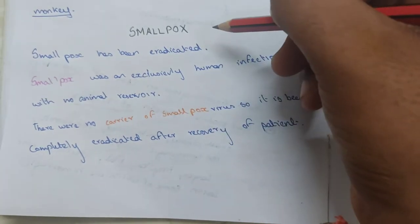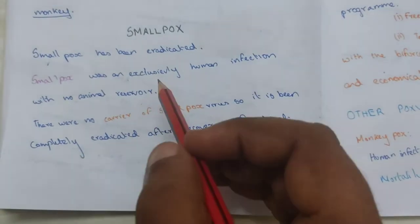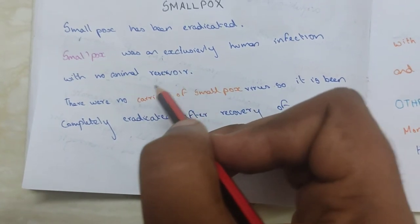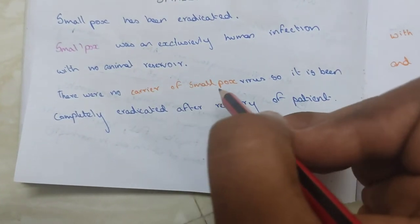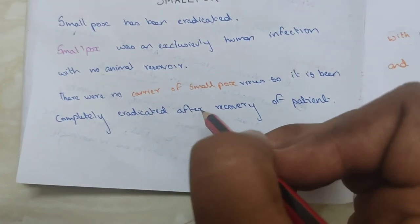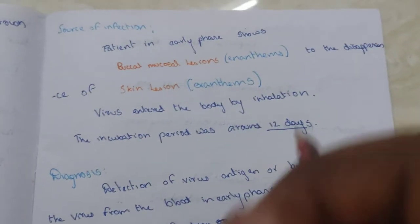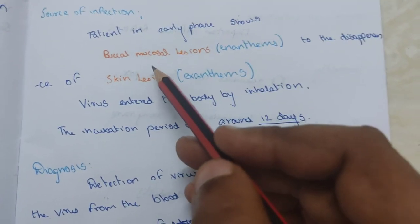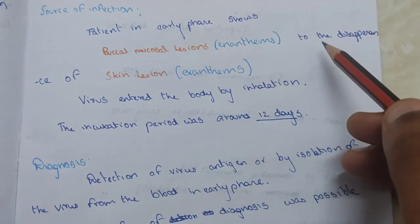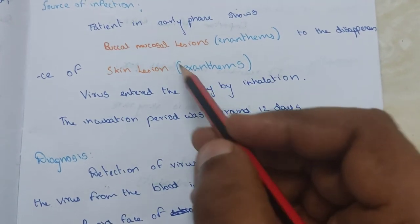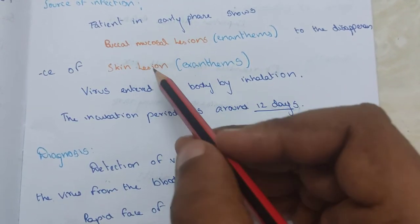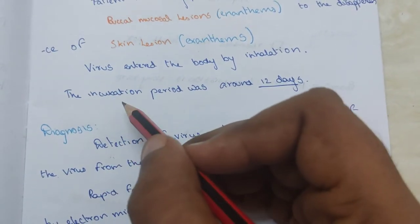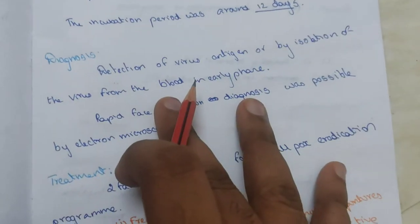Smallpox has been eradicated. It was exclusively a human infection with no animal reservoir and no carriers of the virus, which is why it could be completely eradicated. The source of infection was a patient in the early phase, showing buccal mucosal lesions (enanthems) through to the disappearance of skin lesions (exanthems). The virus enters the body by inhalation, and the incubation period is 12 days.